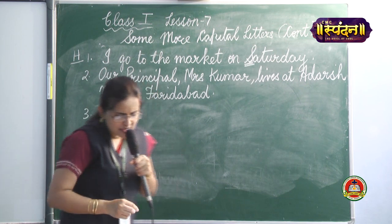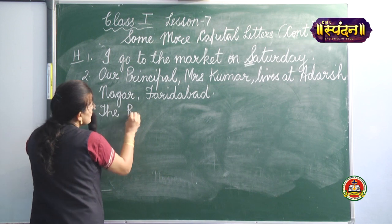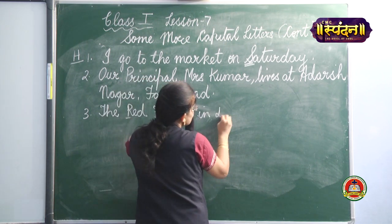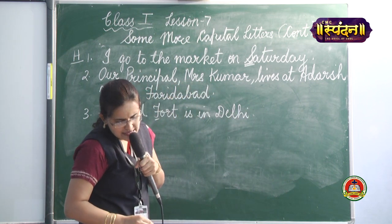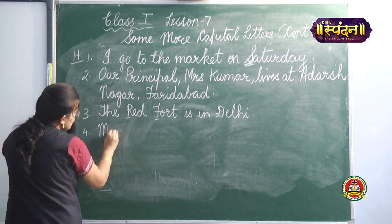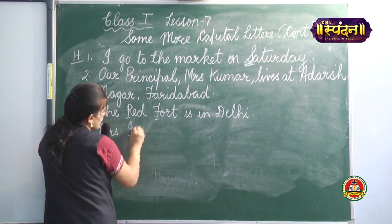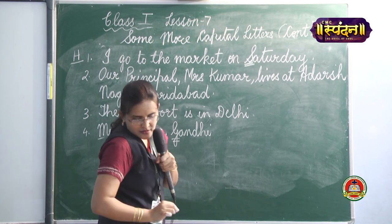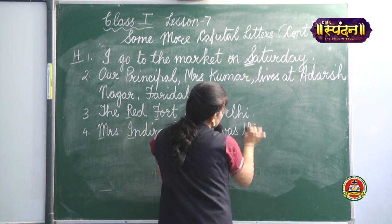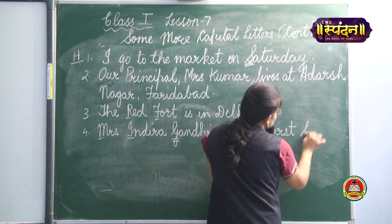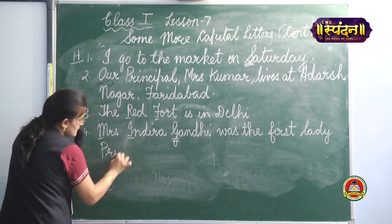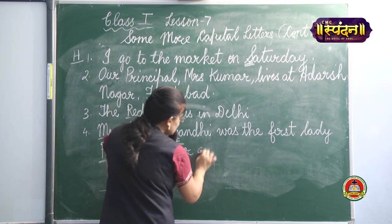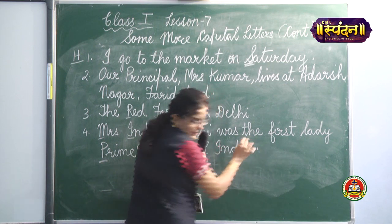'The Red Fort is in Delhi.' The first letter will be in capital. Red Fort's R and F will be in capital, and Delhi's D will be in capital. Then: 'Mrs. Indira Gandhi was the first lady Prime Minister of India.' Mrs. M will be in capital. Indira's I will be in capital, Gandhi's G will be in capital. Prime Minister — P will be in capital and M will be in capital. India is a country's name, so it will be in capital.